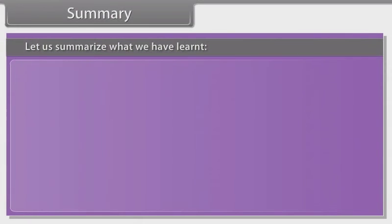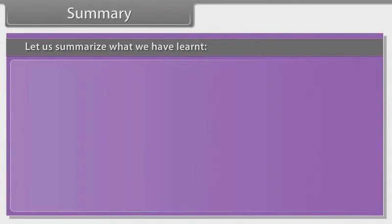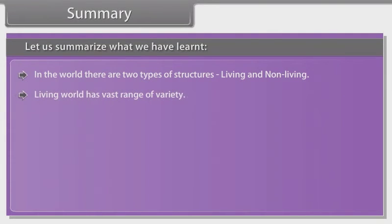Let us summarize what we have learned. In the world, there are two types of structures: living and non-living. Living world has vast range of variety.